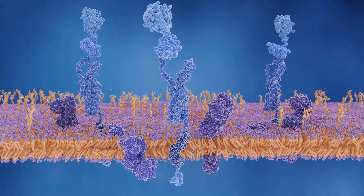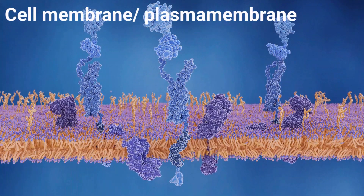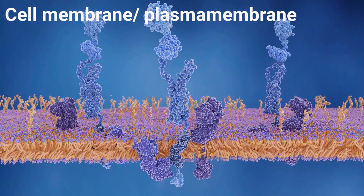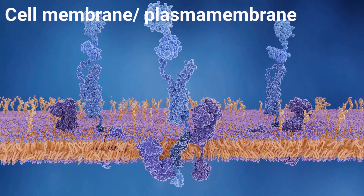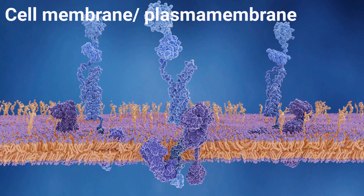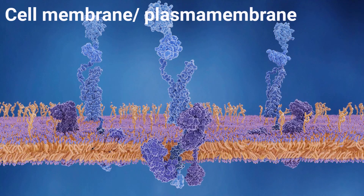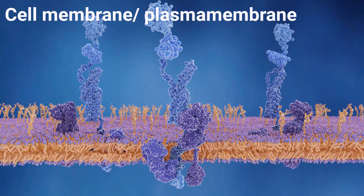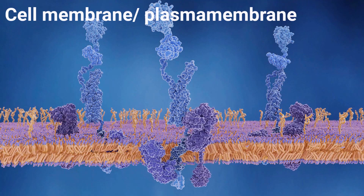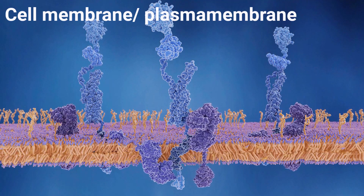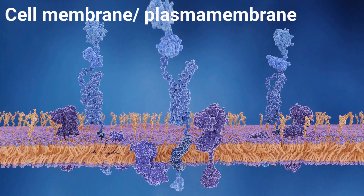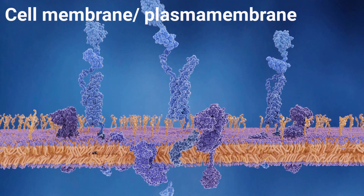Cell membranes are also called plasma membranes. They protect the interior of the cell from the external environment and give it shape. The cell membrane consists of a phospholipid bilayer. The phospholipids consist of fatty acids and alcohol, and each phospholipid consists of a head and two tails.